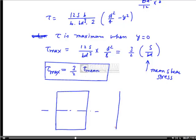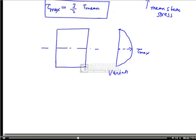The variation of shear stress across the depth of a rectangular section is parabolic — zero at the top and bottom fibers (y = d/2) and maximum at the neutral axis. The distribution is symmetrical about the neutral axis, with τ_max at the center.